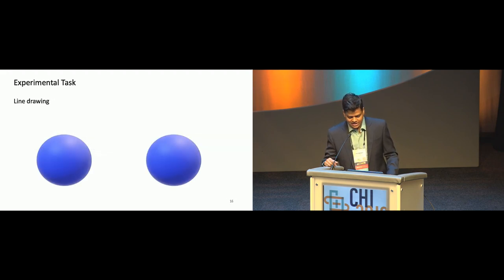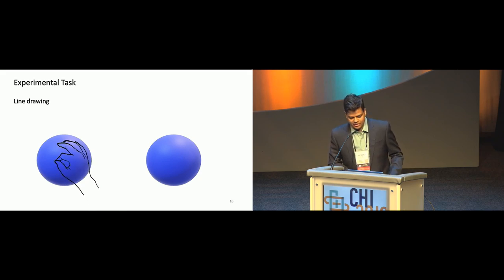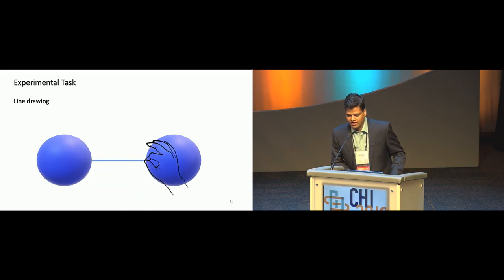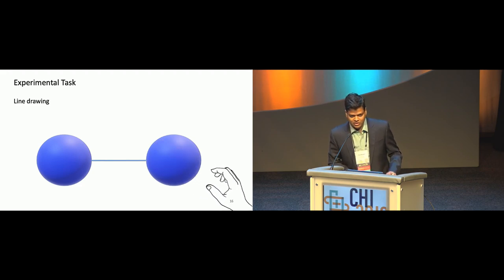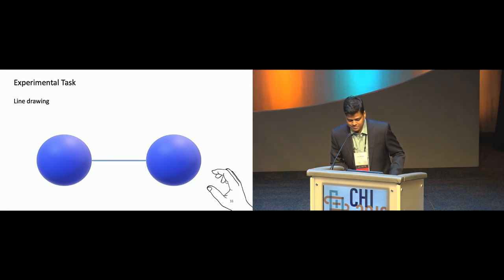The experimental task is line drawing. In the baseline condition, you put your hand inside one of the spheres, start drawing a line, connect that to the second sphere, and get your hand out. This is how the baseline task looks, where you use a pinch hand posture to draw the line.